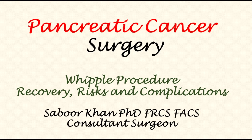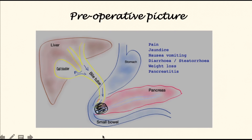In this video we shall assess the recovery risks and complications of the Whipple procedure. This operation is commonly performed for cancer of the head of the pancreas. It is a highly complex operation. In this picture we can see the simplified anatomy: the liver with a bowel tube coming out of it, the pancreas with a tumor at the bottom end of the bowel tube, the gullet, the stomach, and the small bowel.